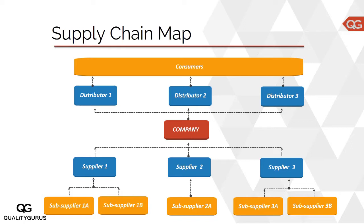Similarly, you also map your distributors, because counterfeit material entering your system isn't the only problem. Your own product could be copied and introduced through different distributors, reaching your customers. That copy of what you are producing could damage your own reputation as well. So you map your suppliers and your distributors all the way to the customer level — how things come to you and how products or services move to the customer from your end.